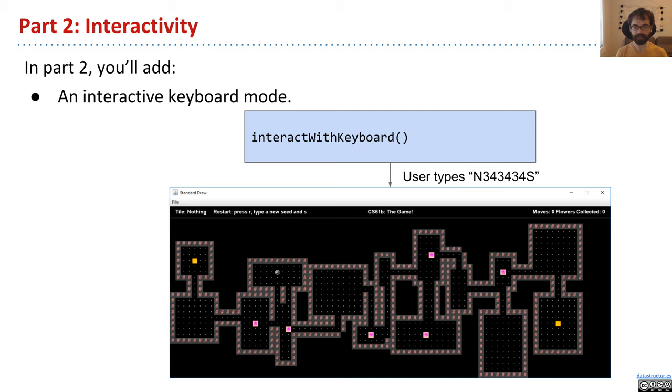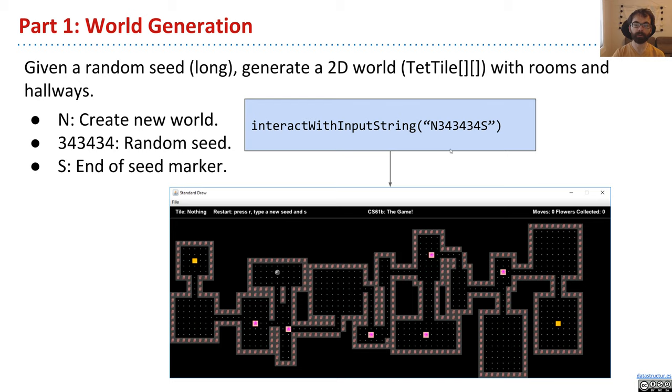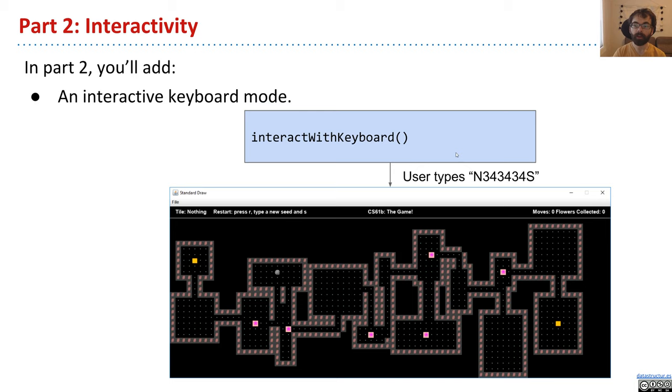So part two, the second week of the project, or the second five days of the project, in this section, you're going to add an interactive keyboard mode. So there's a method called interactWithKeyboard. And the user can type in 343434S, and the same world will pop up. So there's two different versions. One where the game is played from a string, where the world is interacted with using a string, and another where the user types it in interactively, and things happen on the screen as they type.